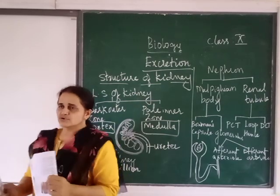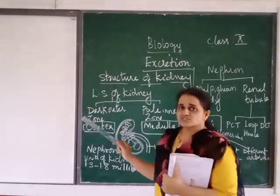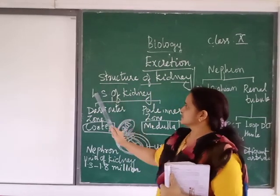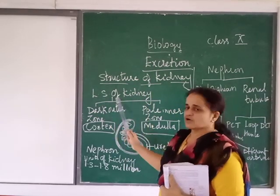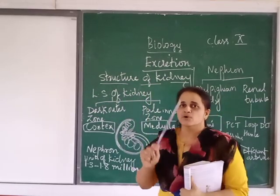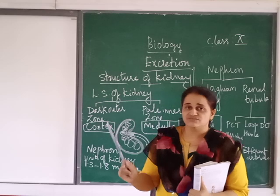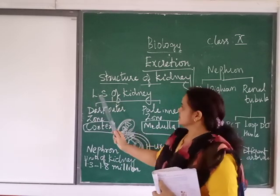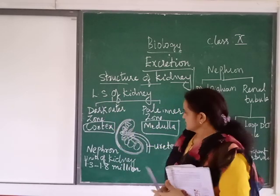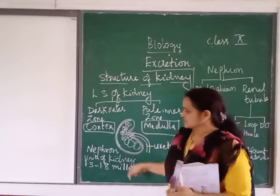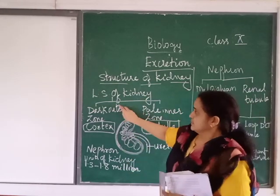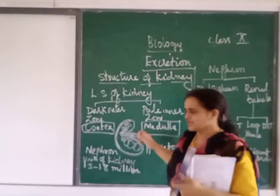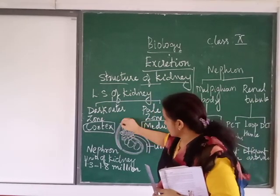Next we will go to the internal structure of kidney. When we study the internal structure of kidney, we have to look at the longitudinal section (LS) of the kidney. Yesterday I showed you the model of the LS of the kidney. LS stands for longitudinal section. So when we look at the longitudinal section of the kidney, there are two zones.